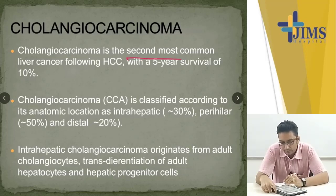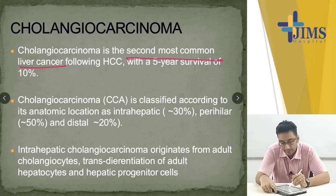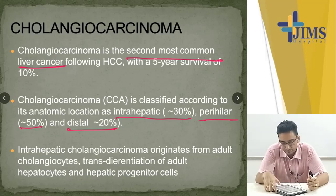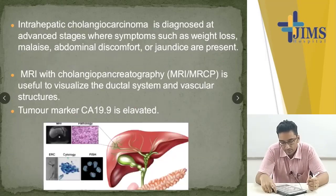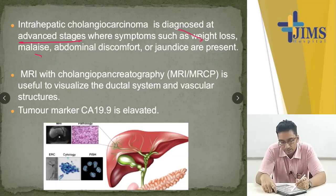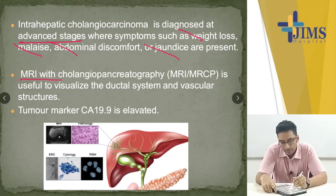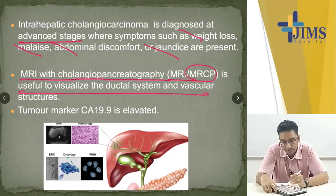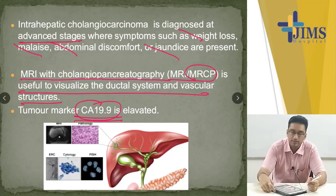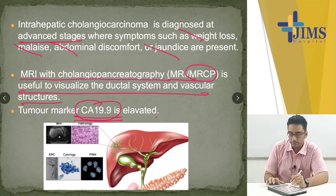Cholangiocarcinoma is the second most common liver cancer. It is classified according to anatomical sites: intrahepatic, perihilar, and distal. It is usually diagnosed in advanced stages with symptoms of weight loss, malaise, abdominal discomfort, or jaundice. MRI with cholangiopancreatography — MRCP — is useful to visualize the ductal system and vascular structures. CA19-9 is a biliary tumor marker and is usually elevated.